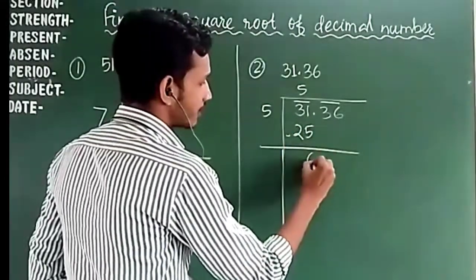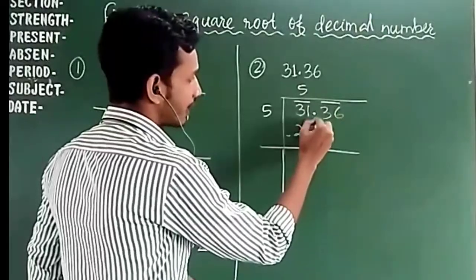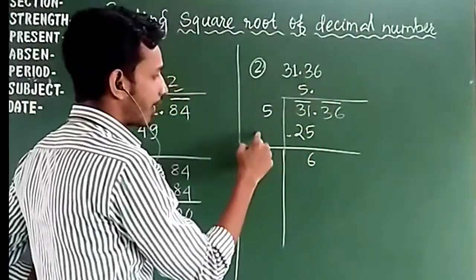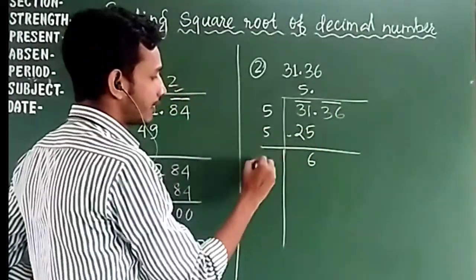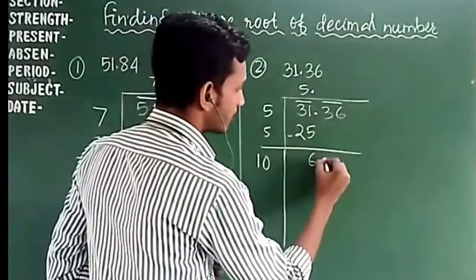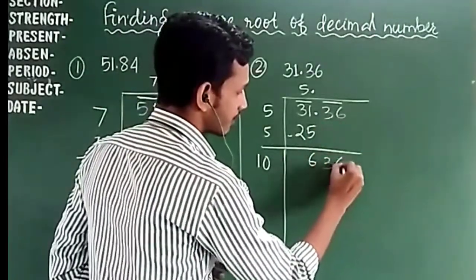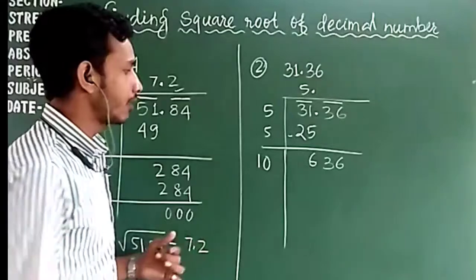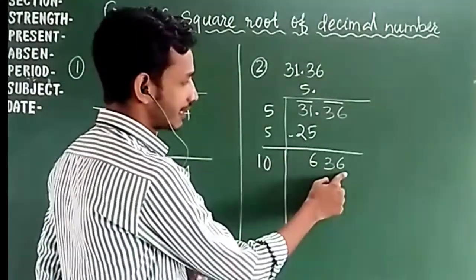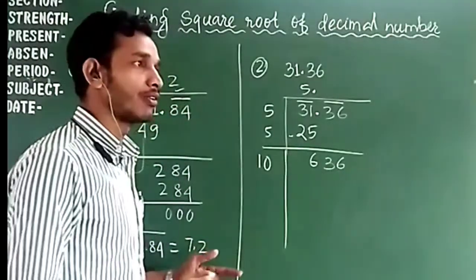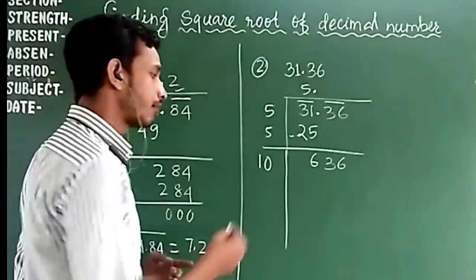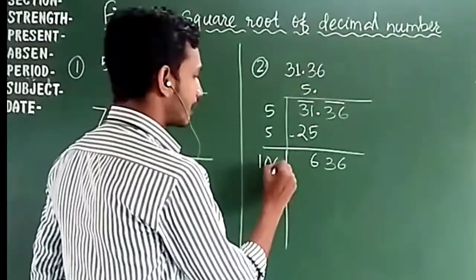So we use 5×5 = 25 and subtract from 31, giving remainder 6. As we cross the decimal point, we put a decimal point in the answer. Double the 5 to get 10, then bring down 36, making the dividend 636.